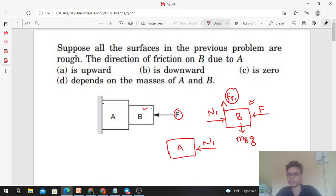So if you balance the forces, N1 should be equal to F, and the value of friction in the upward direction, FR1, should be equal to the weight of block B, which is MB into G. This is the friction force required.